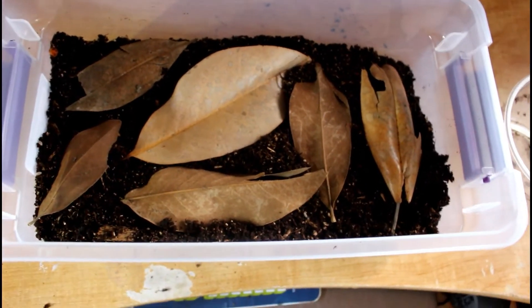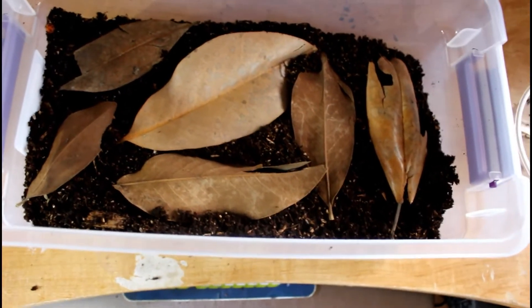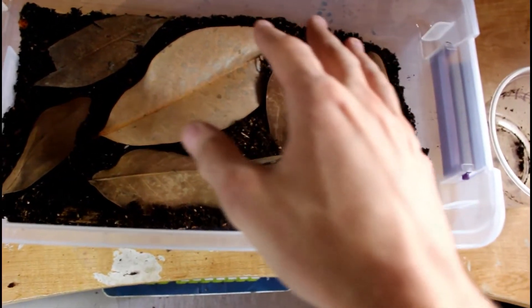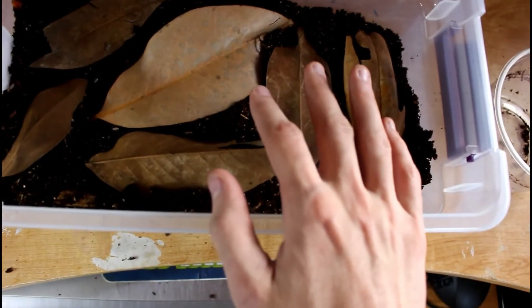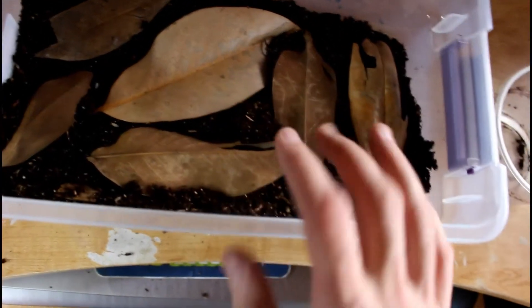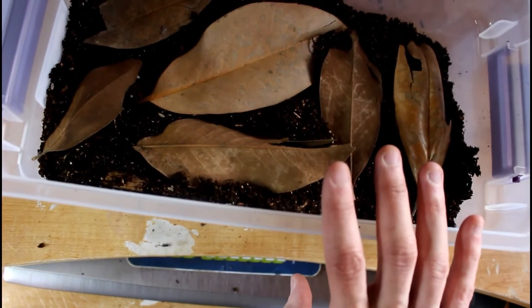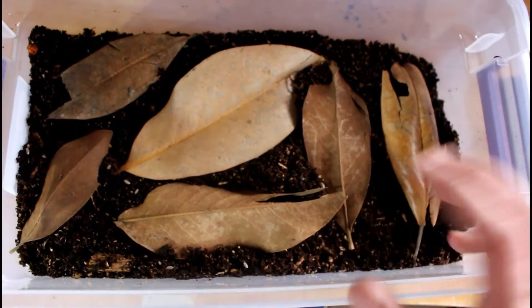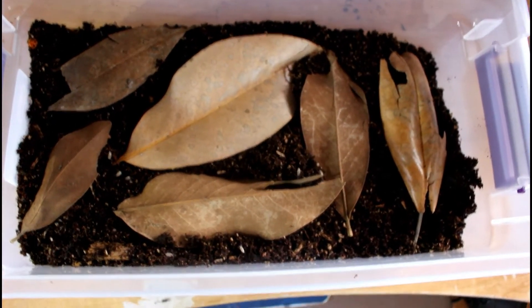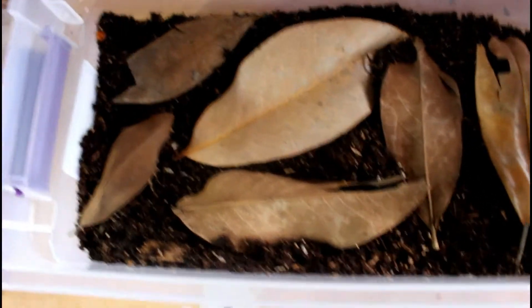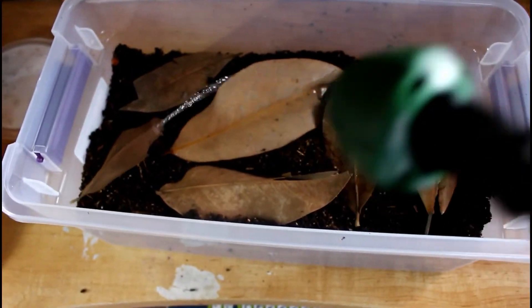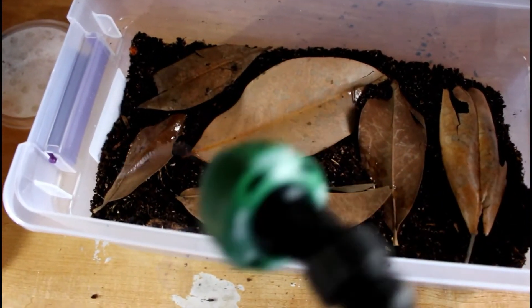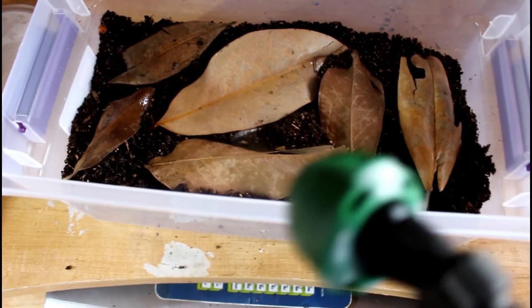So now that we got our leaves in, we're going to give this a good misting. What you want to do, since they do like a lot of humidity, you want to spray it good, but also you want to get the leaves. With the water, it kind of helps soften them so they're able to eat them a little bit easier and they start to decay a little bit faster as well. So we're going to go ahead and do that. Grab a trusty spray bottle. Spray it real nice and good.